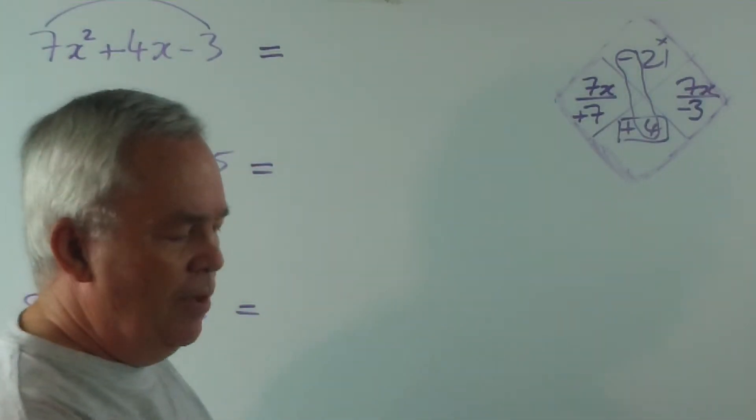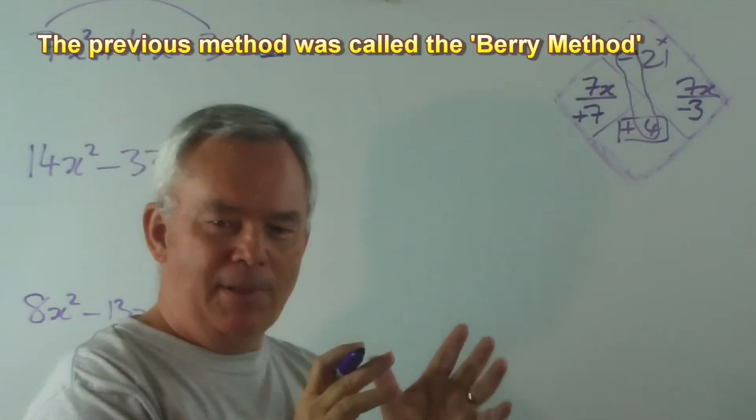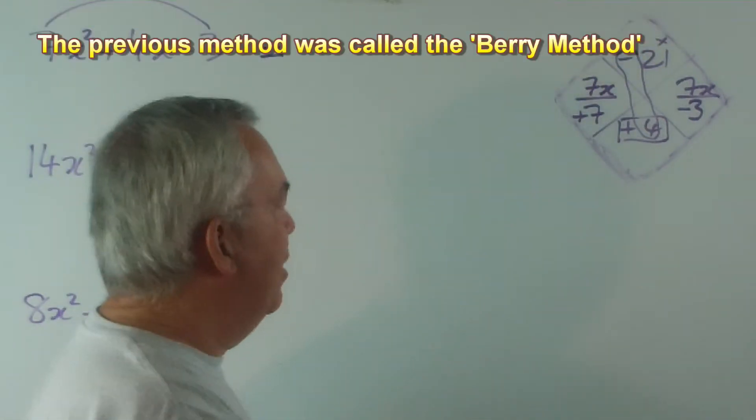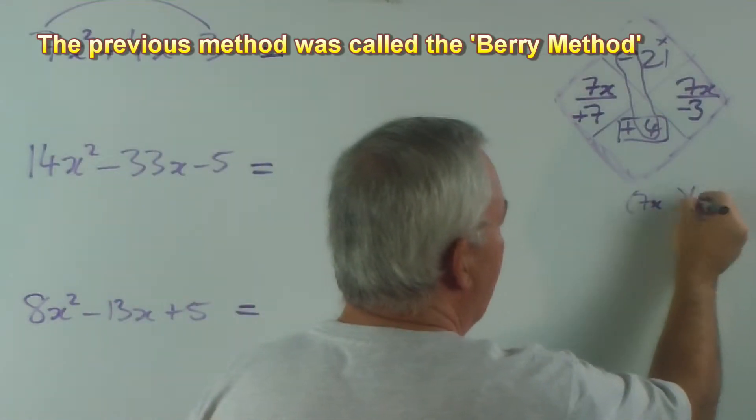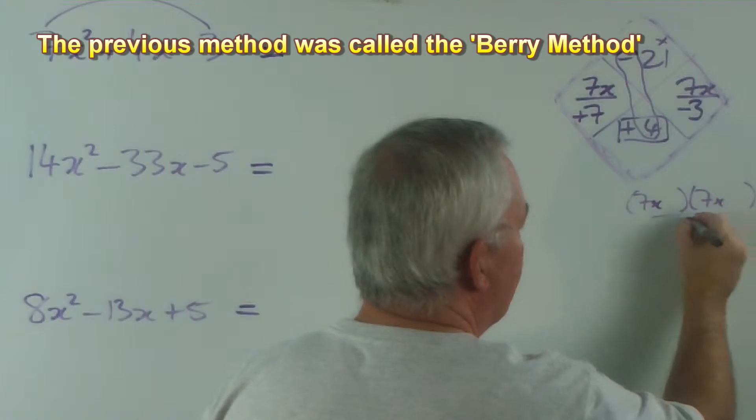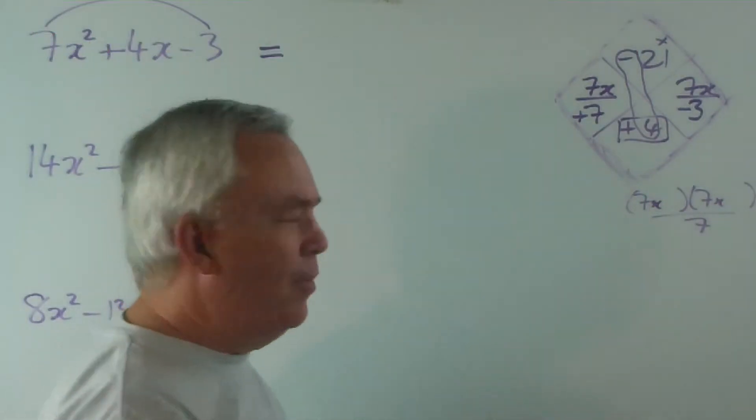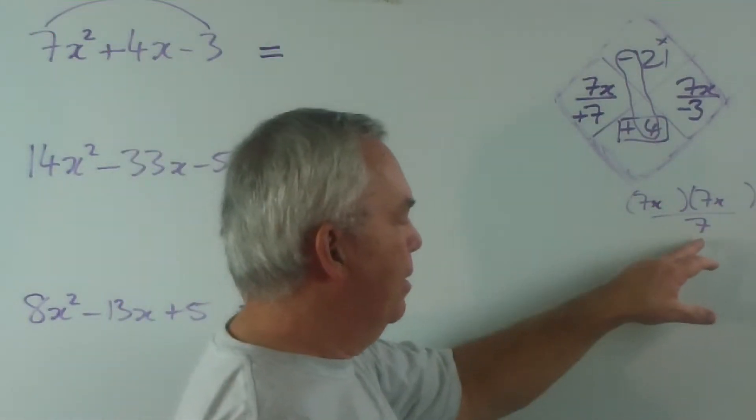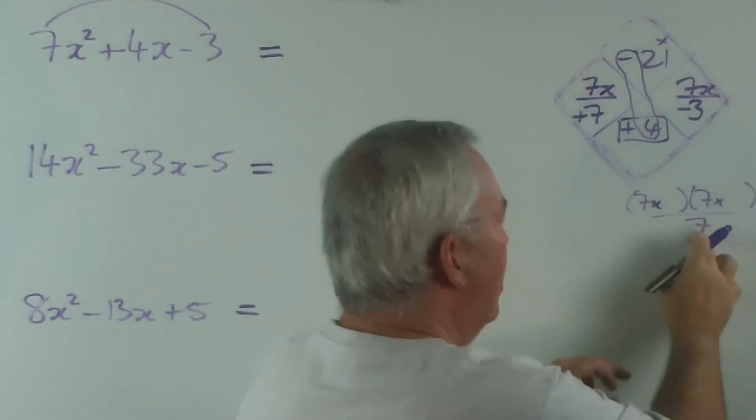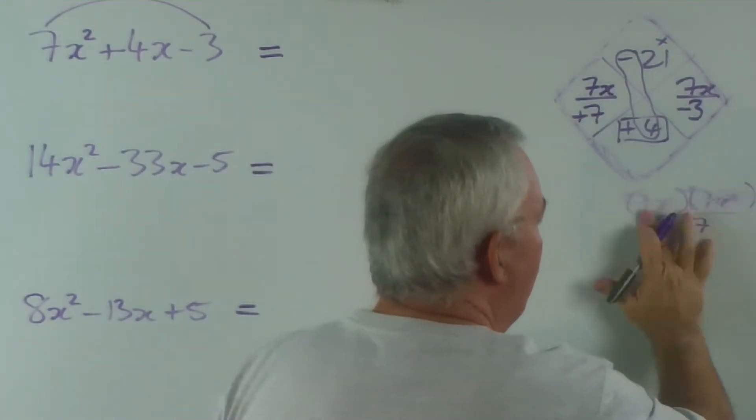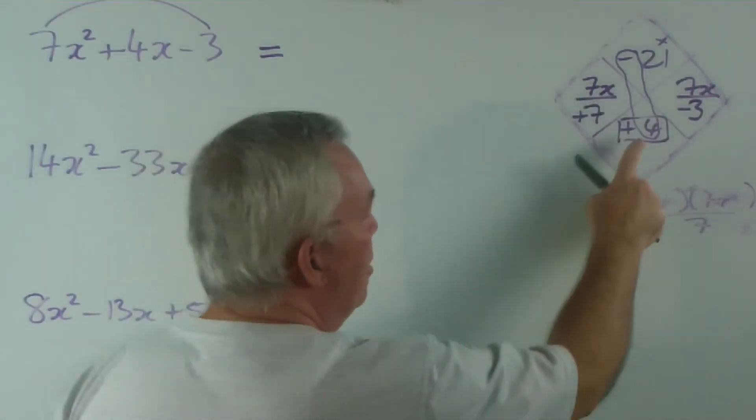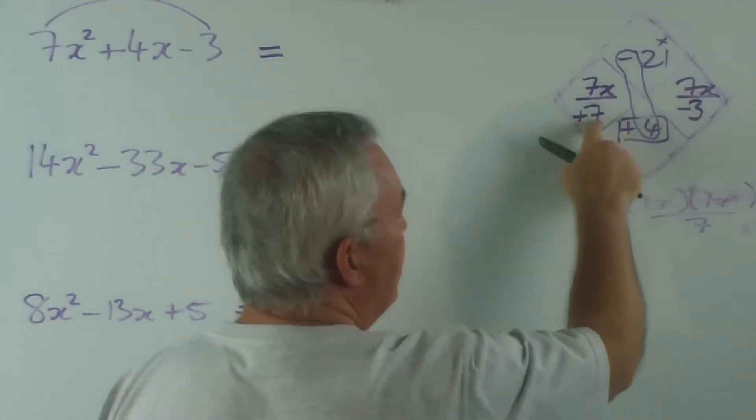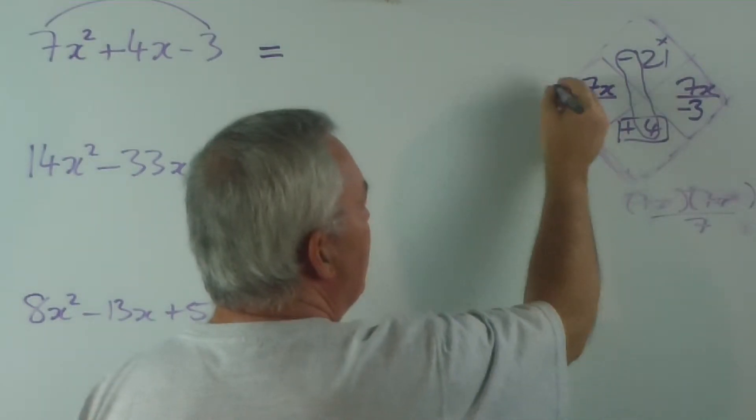Now, if you looked at my previous video - I'm not sure there's a name for this, that method of factorising - but it involved writing 7x, 7x divide by 7, and we had to go ahead. Once we put numbers in here, we had to divide the 7 into one of these sides. This method does the dividing at this stage.